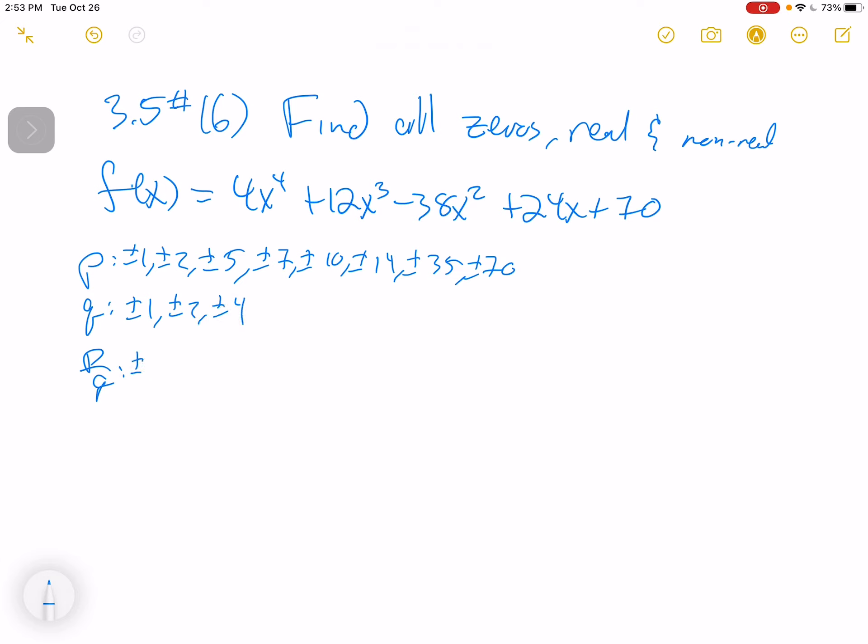And then our p over q's is, look at all these different combinations. Quite a bit here. This is a huge list. Plus or minus 1, plus or minus 2, plus or minus 5, plus or minus 7, plus or minus 10, plus or minus 14, plus or minus 35, plus or minus 70. Keeps on going though.